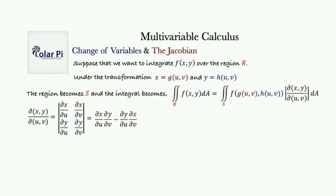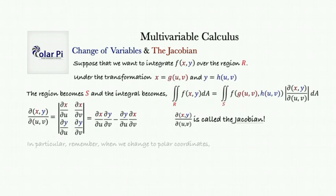As I said, switching to polar coordinates, this little fella is called the Jacobian. When we change to polar coordinates, the variables we're going to change into are r and θ, not u and v. We're going to switch to r and θ.